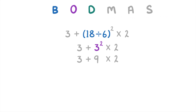Next up is division, but there isn't any in our equation, so we skip that and go on to multiplication, which we do have: 9 times 2 equals 18, leaving us with 3 plus 18. The only thing left is this addition, so 3 plus 18 gives us 21 as our final answer.